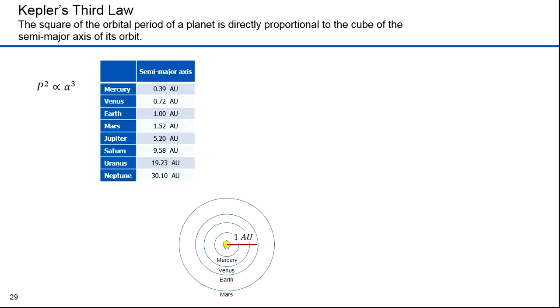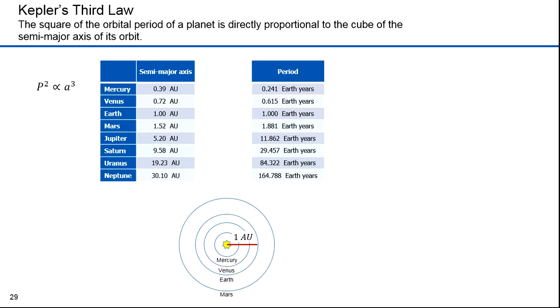Ten years later, Kepler derived his third law. It dealt with the relative periods of the orbits of planets. Kepler's third law states that the square of the orbital period of a planet is proportional to the cube of its semi-major axis. Let's start with the semi-major axis of the planets. I've expressed these in astronomical units. One astronomical unit is the semi-major axis of the Earth orbit. That's the distance from the Earth to the Sun. This makes the math much easier. Here are the orbital periods of each of the planets. To make the math easier again, I put the periods in terms of Earth years.